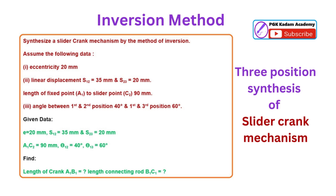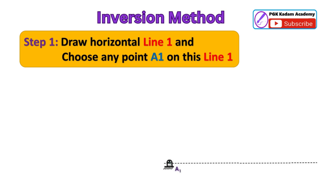Given data in problem statement written - pause video, write on paper. What to find in the problem: synthesize a slider crank mechanism means to find length of crank A1B1 and to find length of connecting rod B1C1. Solve problem stepwise in 7 steps as follows.